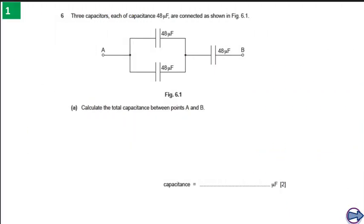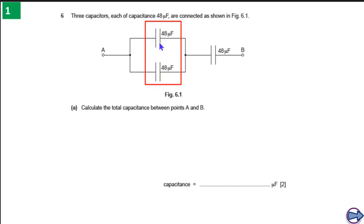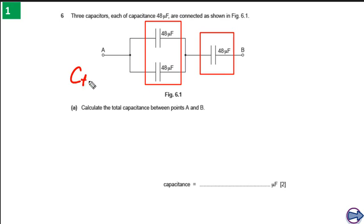Now that we understand how to deal with capacitors in parallel, the first thing we need to do is identify which capacitors are connected in parallel and which are in series. Two capacitors are connected in parallel and one capacitor is connected in series. We find the total capacitance of the parallel pair first: 48 plus 48 equals 96 microfarads.